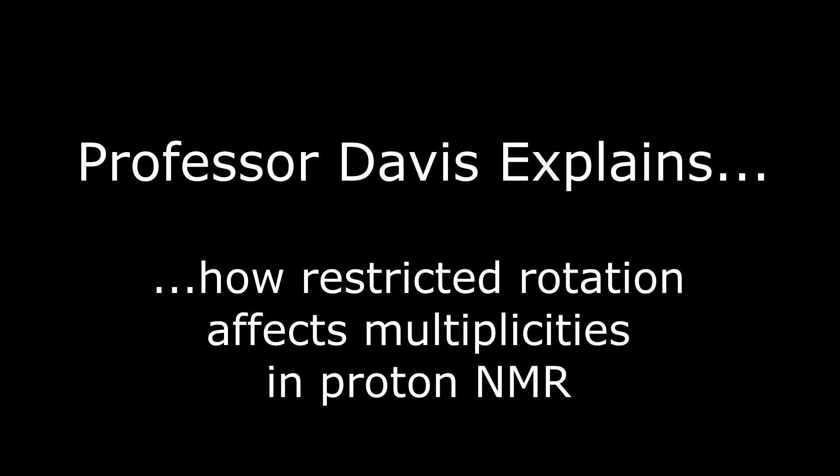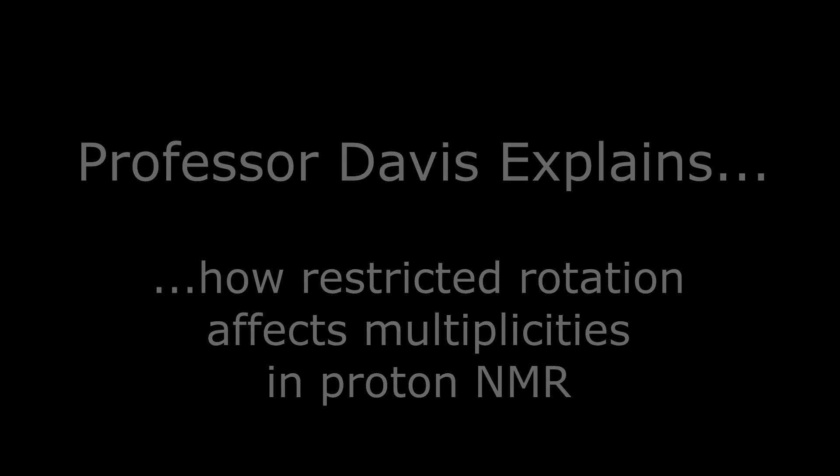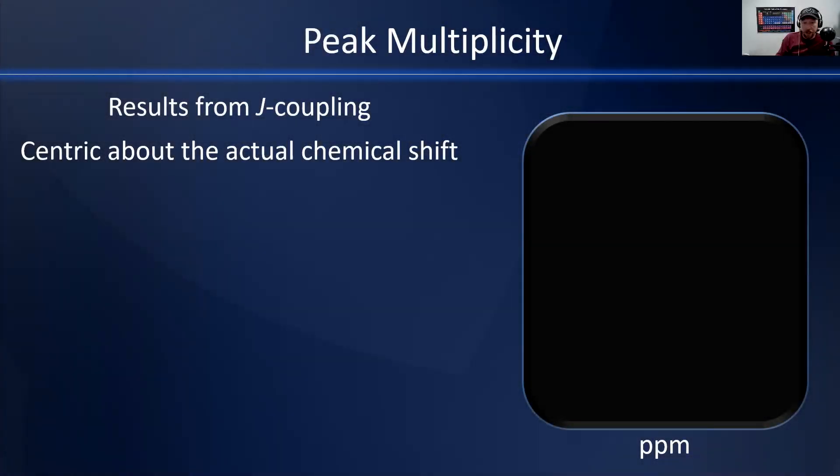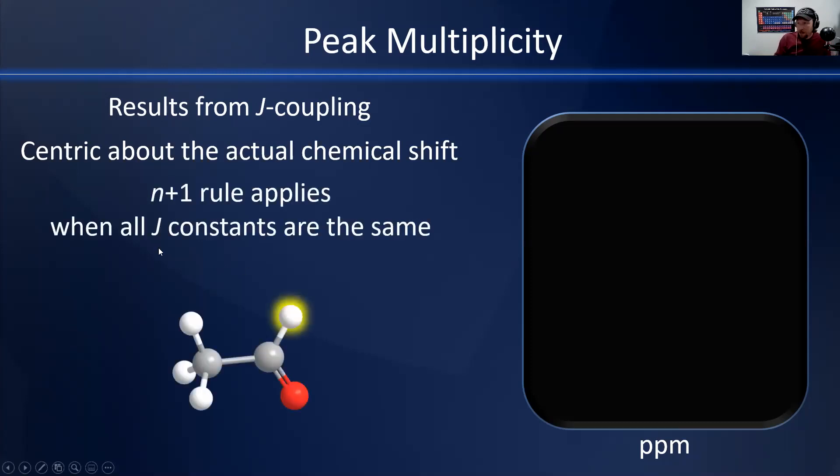We've already covered J coupling in general and three-bond J coupling, which tends to be the most prominent feature that causes multiplets centered about the actual chemical shift of a proton. The n+1 rule applies when there is free rotation, like in the small molecule we looked at last time.